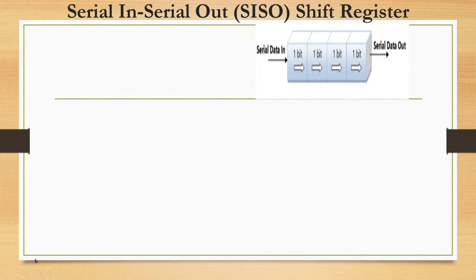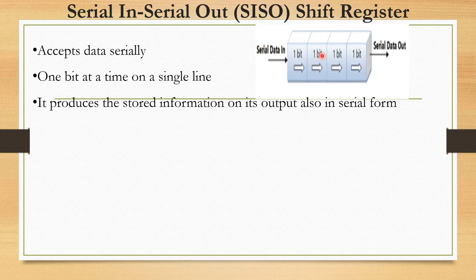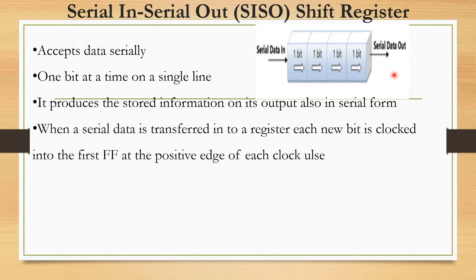Serial In Serial Out shift register — data in and data out is serial. As you can see in the sample figure, serial data enters 1 bit at a time on a single line. It produces stored information on its output also in serial form. That is how we retrieve information in serial form.